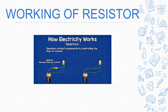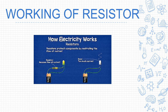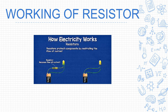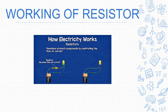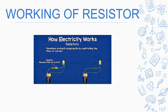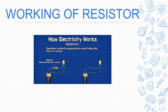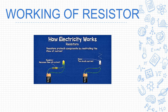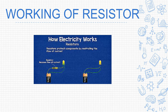The resistor reduces the current flow. Without a resistor attached, too much current flows and the bulb will burn out. So resistors protect components by restricting the flow of current — they control and limit it so that your appliances are not damaged.